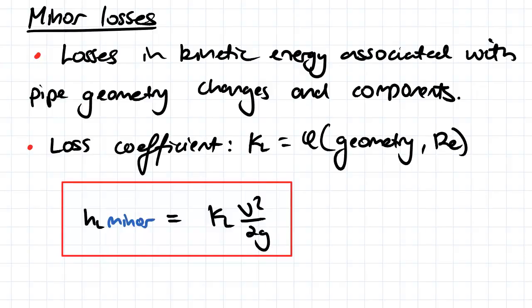We have what we call a loss coefficient, which we define for our minor losses, and that is KL, which is a function of geometry and Reynolds number. And we define the head loss, or the minor head loss component of head loss, equal to KL times v squared over 2g.